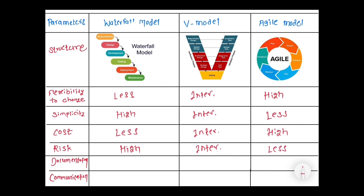The next parameter is documentation. In the waterfall model, the documentation work is intermediate compared to the other two models. Whereas in V model, the documentation work is very, very high. Whereas in agile model, documentation is very less — less or negligible documentation in agile model.